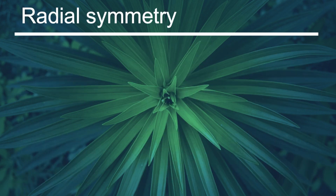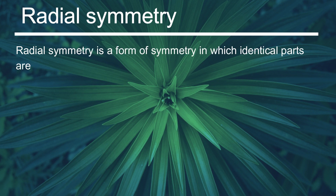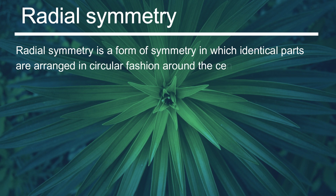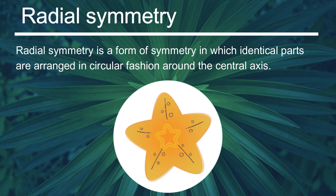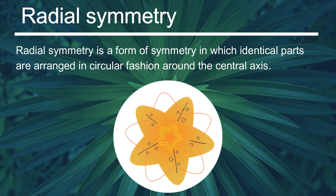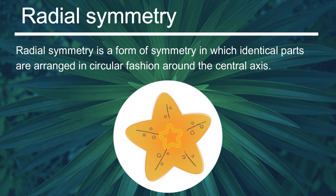The second type is radial symmetry. Radial symmetry is a form of symmetry in which identical parts are arranged in a circular fashion around a central axis. To understand it simply, let's pick a starfish. If we rotate it through 72 degrees around an axis through its center, we end up with an object identical to the original one. The transformation that leaves the object unchanged is a rotation through 72 degrees, meaning the object is symmetrical with respect to rotation of 72 degrees around the center.